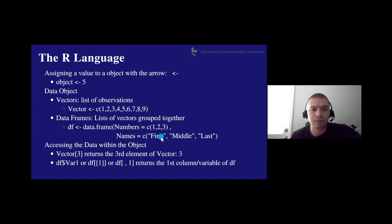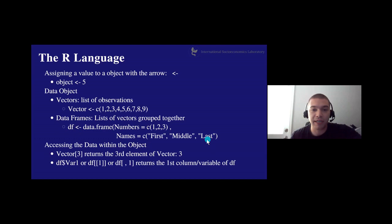The next basic data structure is the data frame — a list of vectors grouped together. For example, df gets assigned data.frame() with two columns: 'numbers' containing one, two, three; and 'names' containing 'first', 'middle', 'last'. When you run this code it returns something like Excel, where the first column is numbers and the second column is names. When reading in data in R it will be read as a data frame, so you can think of it basically like Excel.